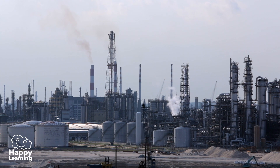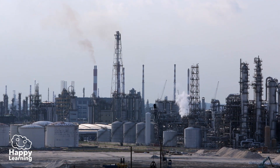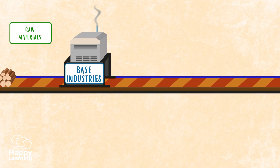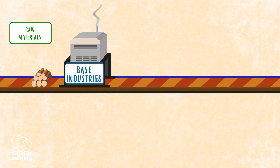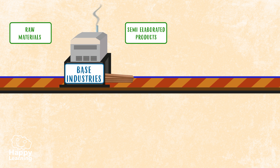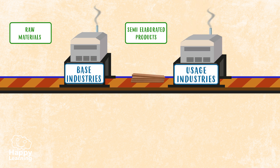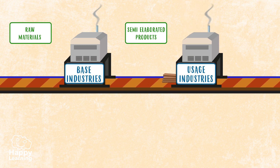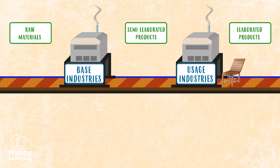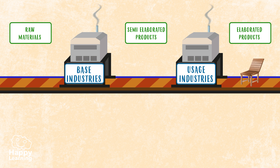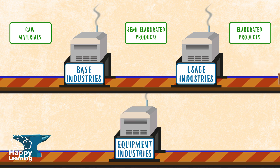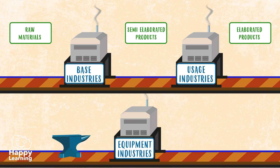Industry can be classified into three types: base industries, usage industries, and equipment industries.